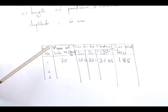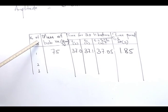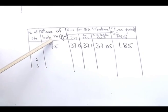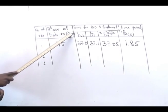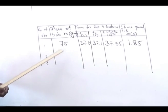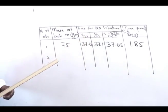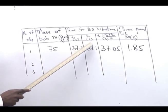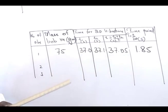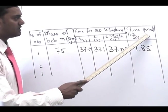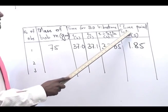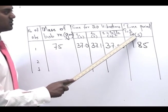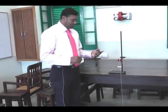We follow the table of observations and calculations. The first column is the number of observations — we record three with three different bobs. The second column is the mass of the ball. The third column is the time for 20 vibrations, recorded twice. We then compute the mean value, and finally calculate the time period by dividing the mean time by 20.